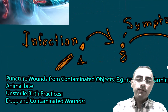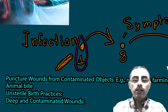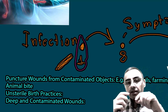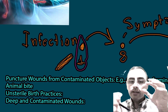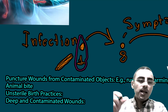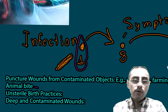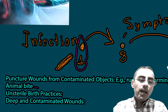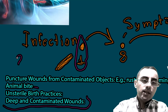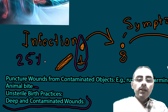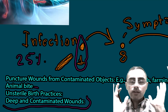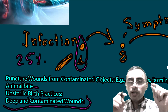Looking at the disease timeline: infection usually begins with a puncture wound, typically deep rather than shallow. Deep puncture wounds from rusty nails, farming equipment, animal bites, or contaminated wounds are common causes. For a deep, contaminated puncture wound, the infection rate is around 25%, which is quite high.